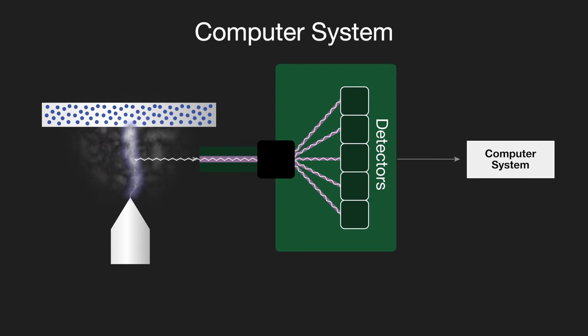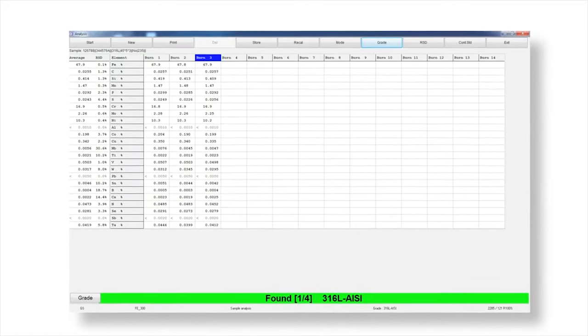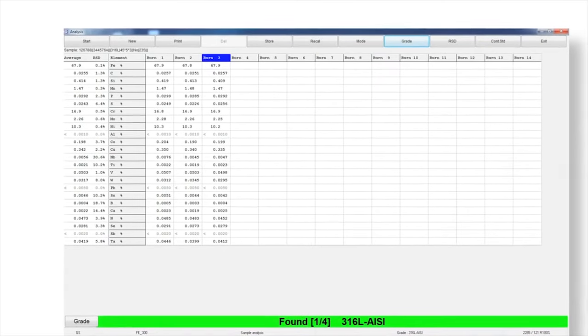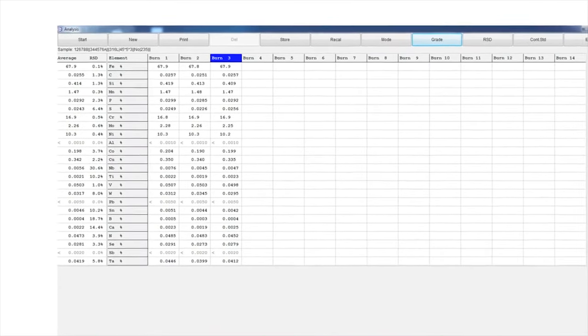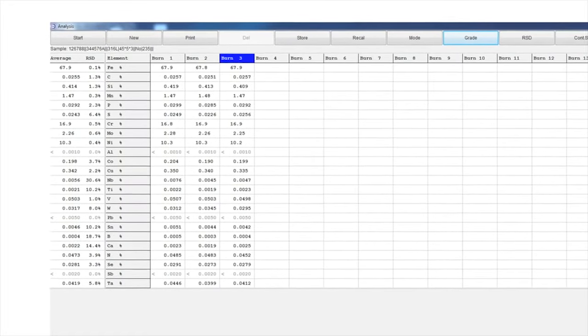The third component is the computer system. The computer system acquires the measured intensities and processes this data via a predefined line calibration to produce elemental concentrations. The user interface ensures minimal operator intervention with results clearly displayed, which can be printed or stored for future reference.